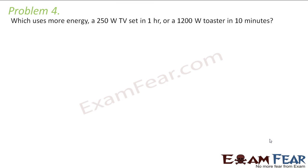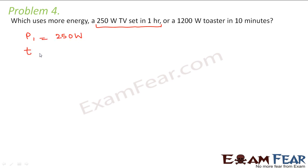Let's look at the next problem. It says: which uses more energy, a 250 watt television set in one hour or a 120 watt toaster in 10 minutes? Let us calculate the energy for the first one. For the television set, power is given as 250 watts and time is given as one hour, so one hour would mean 60 into 60 seconds.